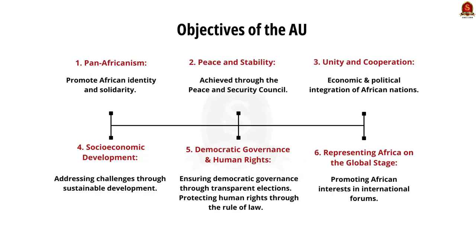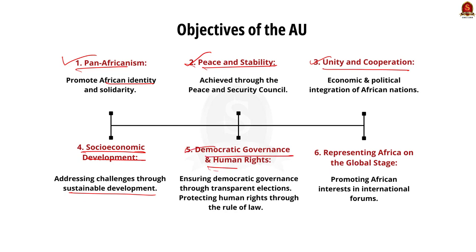The objectives of the African Union include: first, promoting pan-Africanism — encouraging a sense of African identity and solidarity among its member states and citizens. Second, promoting peace and stability through its Peace and Security Council. Third, enhancing unity and cooperation — economically and politically integrating African nations. Fourth, addressing socio-economic challenges through sustainable development. Fifth, promoting democratic governance and the protection of human rights through transparent elections and the rule of law. Finally, representing African countries in international forums to promote African interests on the global stage. These are some of the objectives of the African Union.